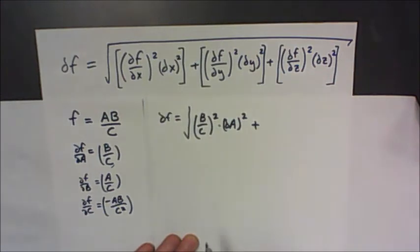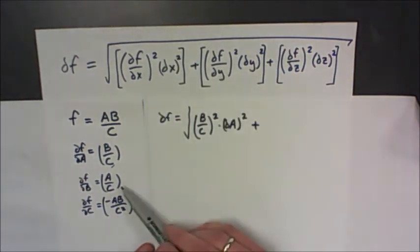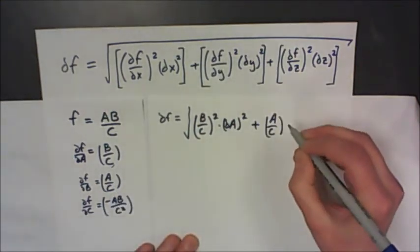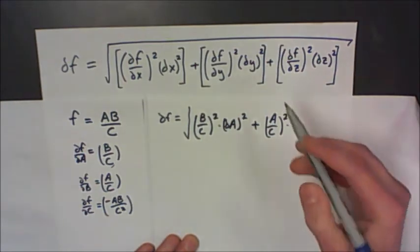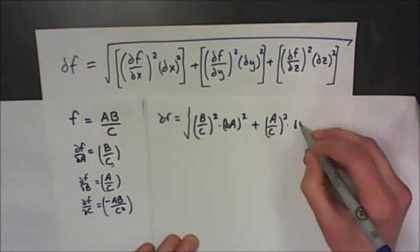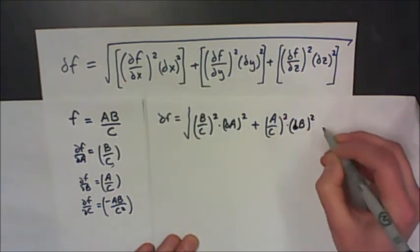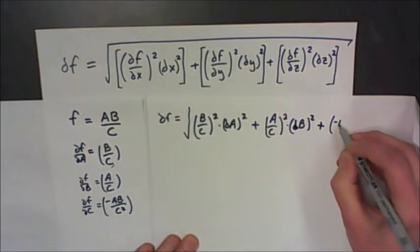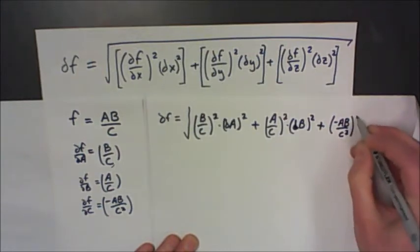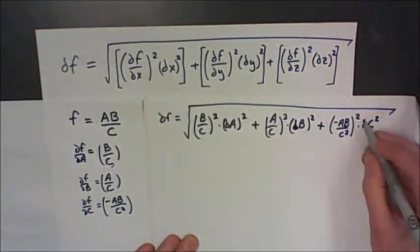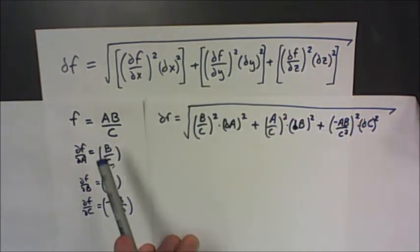Now my second term: the partial derivative with respect to b was a over c, so a over c squared, multiplied by the uncertainty of b, also squared. Then I do it again for c: the partial derivative with respect to c was negative ab over c squared, squared, times the uncertainty of c, also squared — all of it inside a square root. So this is my uncertainty on ab over c, found using calculus.